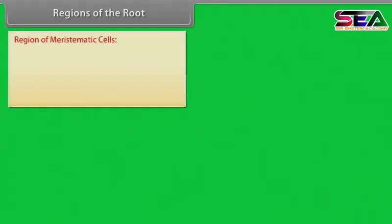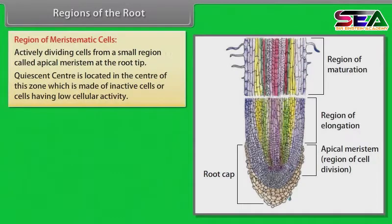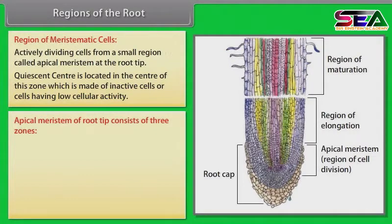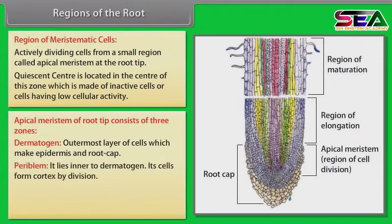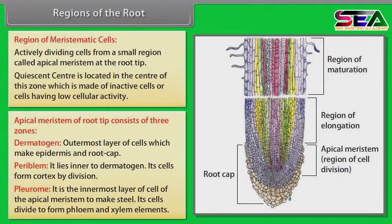Region of meristematic cells. Actively dividing cells form a small region called apical meristem at the root tip. The quiescent center is located in the center of this zone, which is made of inactive cells or cells having low cellular activity. Apical meristem of root tip consists of three zones: dermatogen — the outermost layer of cells which make epidermis and root cap; periblem — it lies inner to dermatogen and its cells form cortex by division; and plerome — the innermost layer of cells of the apical meristem to make stele, whose cells divide to form phloem and xylem elements.